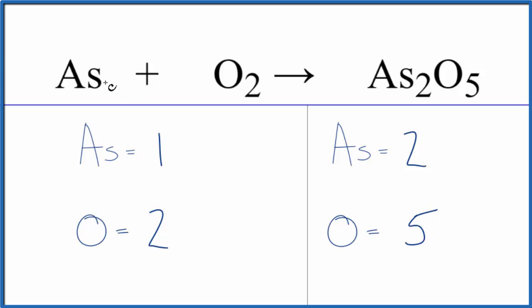When we go to balance it, we'll leave the arsenic here to last since it's by itself. That's really easy to balance. The problem is we have an odd number here. When you have an odd number, it's often very helpful to get that to be an even number by multiplying by two.